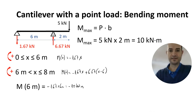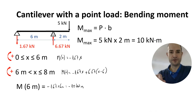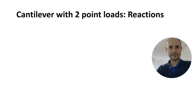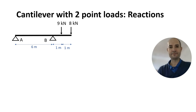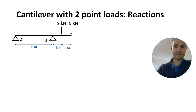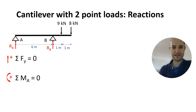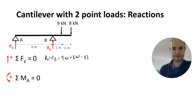Now we are going to calculate the reactions and moment for a more common case in scaffold design — a cantilever beam with two point loads: the inner leg load and the outer leg load. We have the same dimensions as before; the only difference is that now we have two point loads of 9 and 8 kN. We use static equations to obtain the reactions, so RA plus RB must equal 9 kN plus 8 kN for a total of 17 kN.